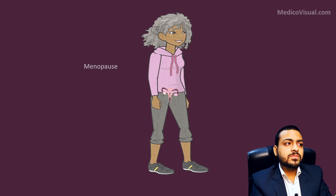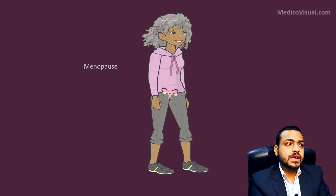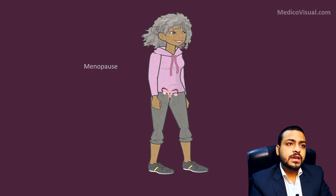The cycle will continue until this lady becomes old, when it becomes very difficult for her body to efficiently maintain and sustain pregnancy. At that time the cycle stops permanently — that is called menopause, which occurs at about the age of 50 years.